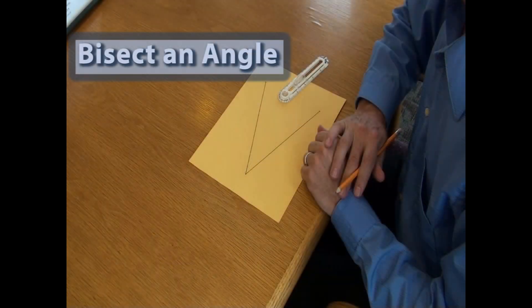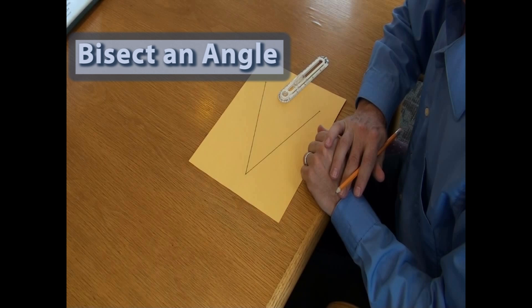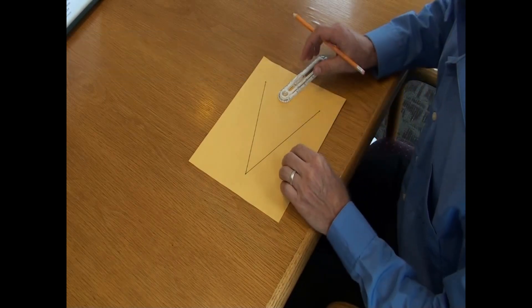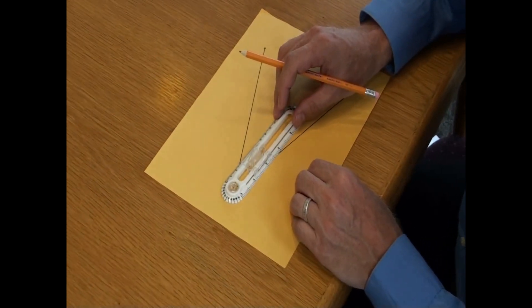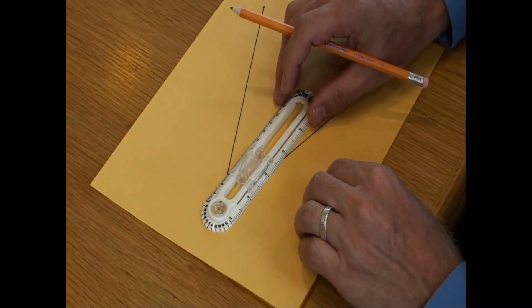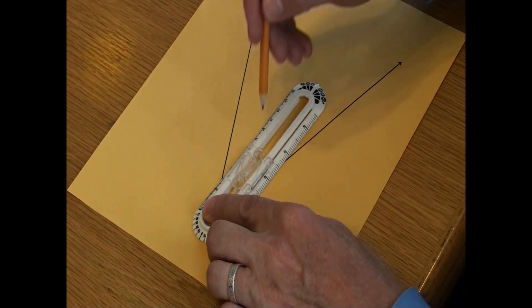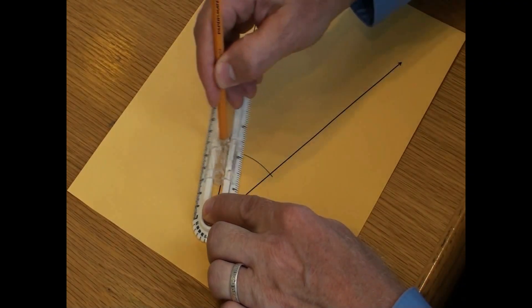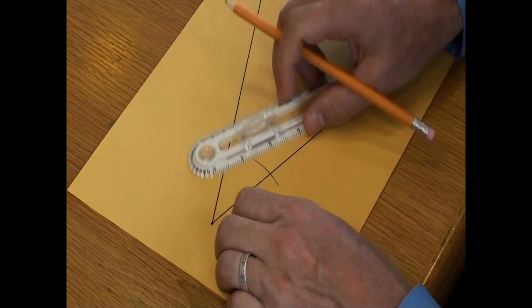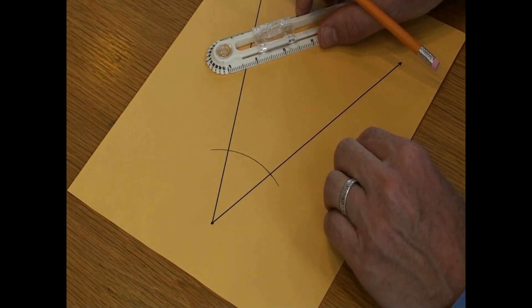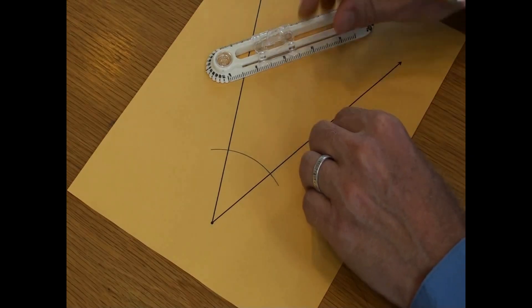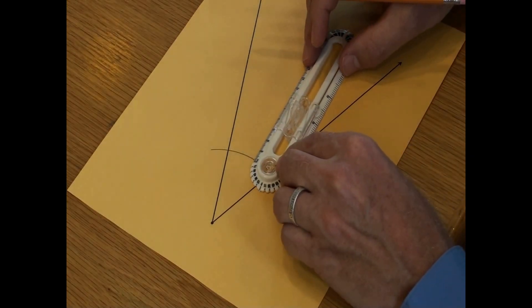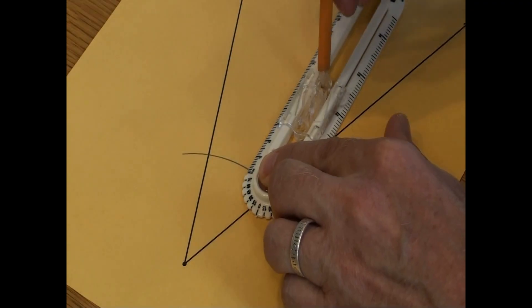For our final demonstration, I'm going to demonstrate how to use the compass to bisect an angle. We start by placing the pivot point on the angle's vertex. Now I will strike an arc that intersects both sides of the angle. I'll now reposition the pivot point on this intersection of the angle and the arc.